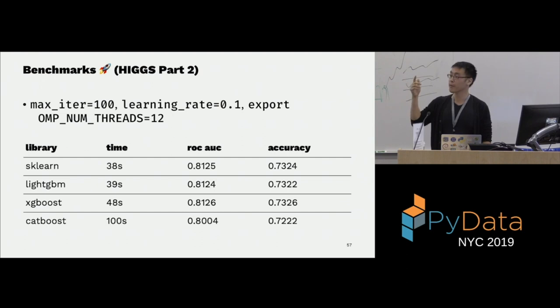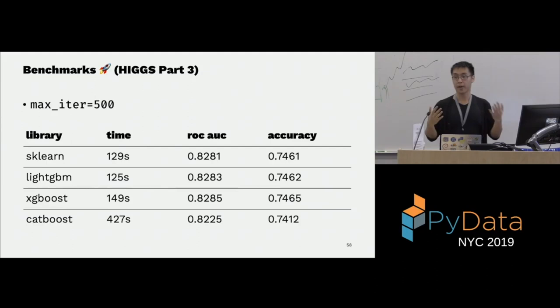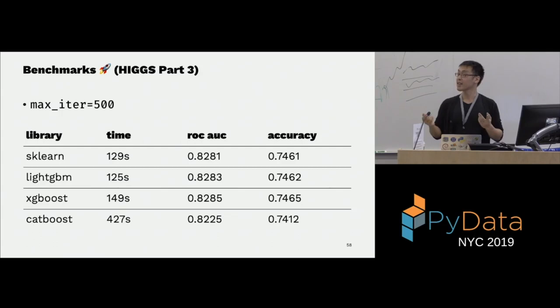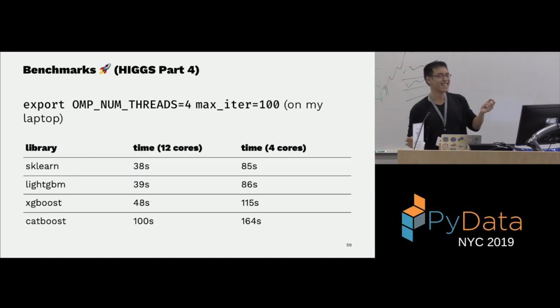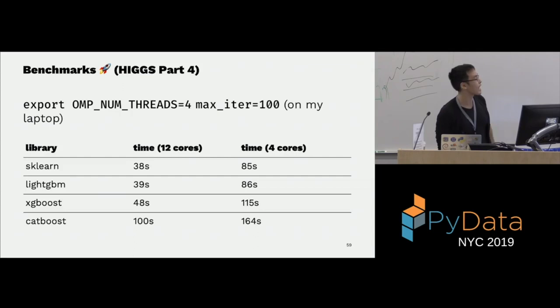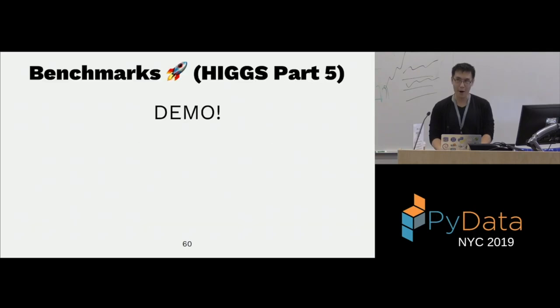SKLearn and LightGBM are equivalent in training time and have similar accuracy and ROC score. Setting max_iter to 500, SKLearn and LightGBM remain on par. The ROC scores got better with more trees. The cool thing is Scikit-Learn is written in Cython and LightGBM is written in C++, and we get this performance just from Cython. On my laptop: 85 seconds for 100 rounds for SKLearn, 86 for LightGBM, and 115 for XGBoost.